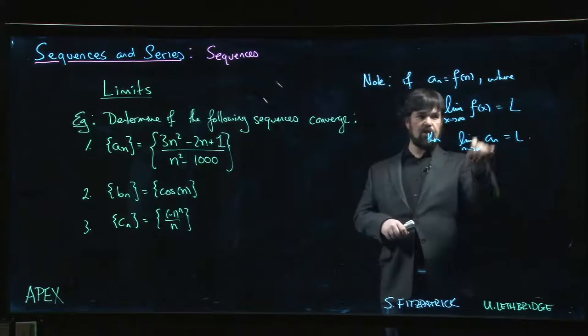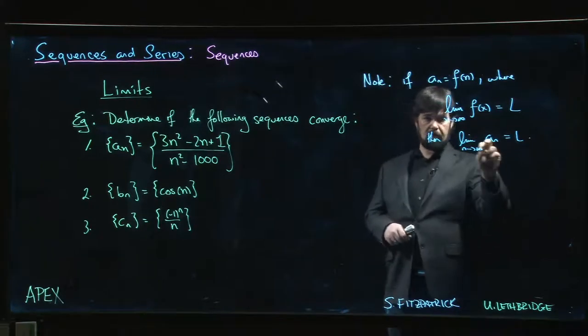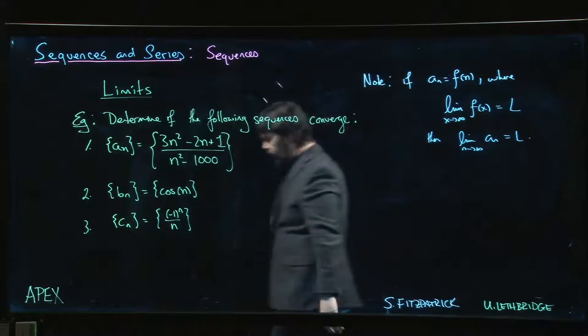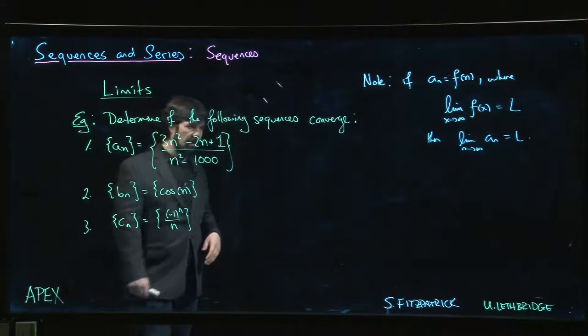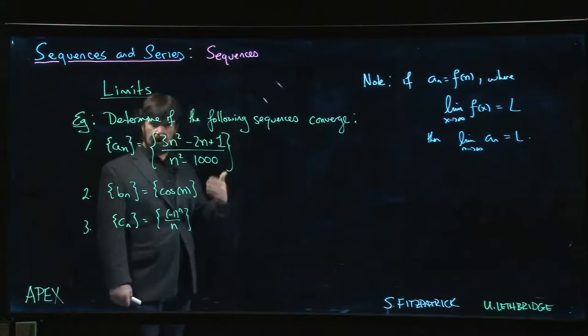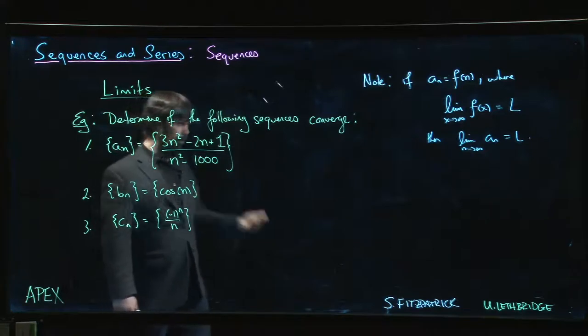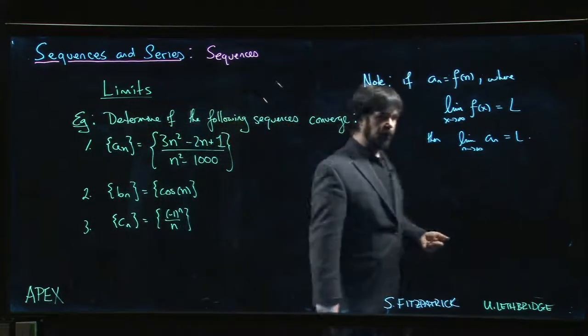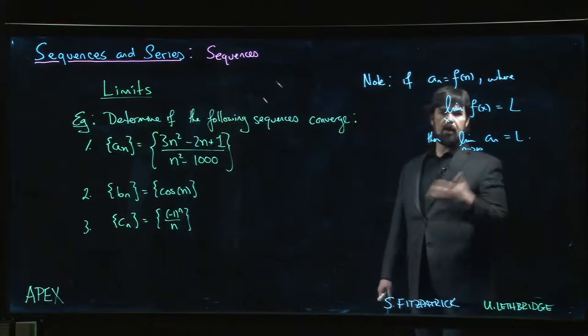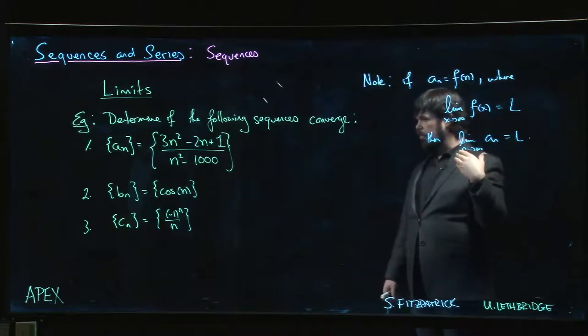That doesn't always work because there will be situations where this limit doesn't exist but we can still make sense of the sequence. There might be functions that for a real variable are jumping around, but you put in only integer values and things settle down. This does give a handy tool.